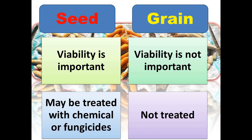As the seed is concerned, we can treat it with chemicals or fungicides, because when we have to sow it, it can get infected by soil microbes. So to give it protection during the germination process, it can be treated with chemicals. But in case of grain, when we have to use it for food purposes, it cannot be treated in any way.